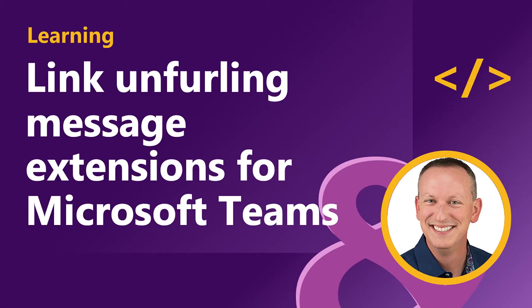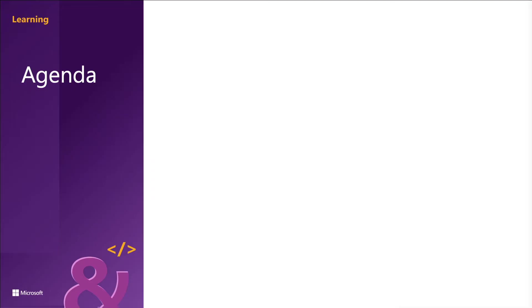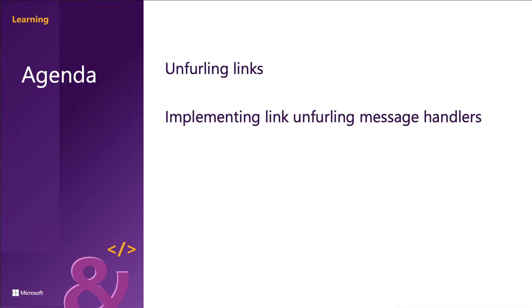Link unfurling is the process of taking a hyperlink that's been pasted into a message and doing some action based on the result of processing the link. This process allows the developer to do a search or display a card. In this section we're going to see how to add link unfurling to a Microsoft Teams app and how to implement this type of messaging extension, specifically looking at unfurling links and how to implement unfurling message handlers.